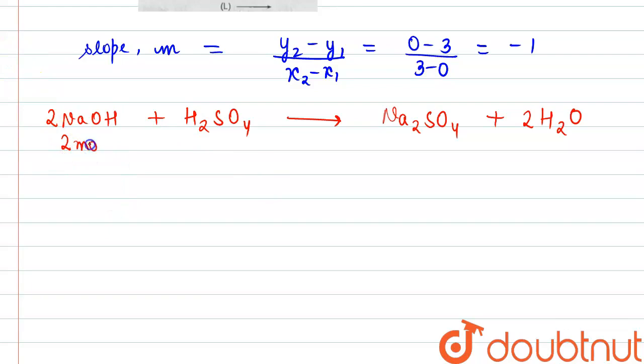Two moles of NaOH basically are requiring one mole of sulfuric acid for the complete neutralization.